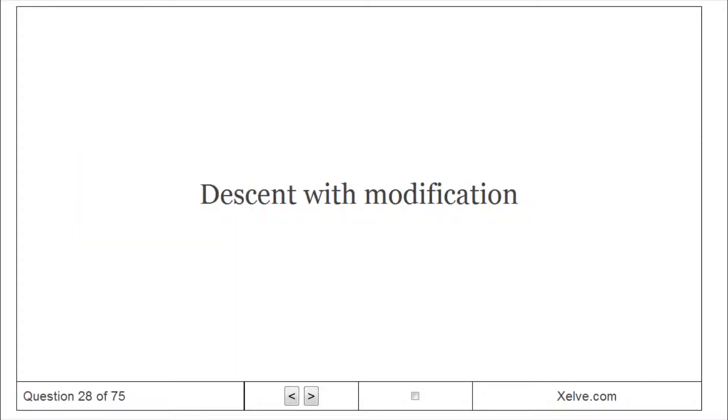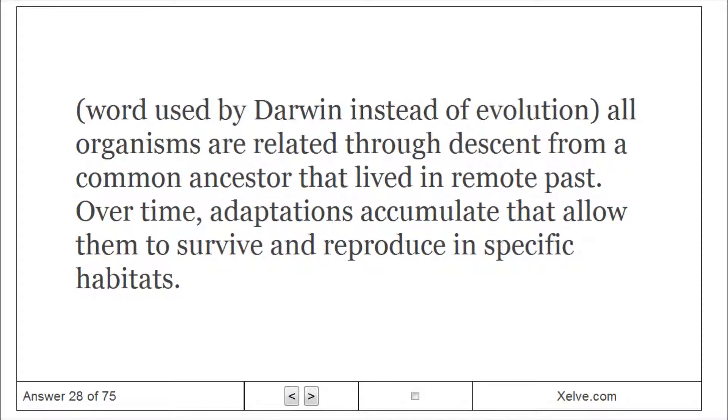Evolution, Descent with Modification: Word used by Darwin instead of evolution. All organisms are related through descent from a common ancestor that lived in remote past. Over time, adaptations accumulate that allow them to survive and reproduce in specific habitats.